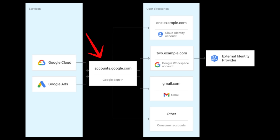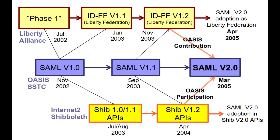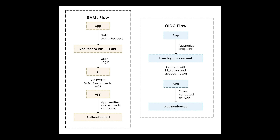While they solve the same core problem, SAML and OIDC come from different eras and technological foundations. SAML was designed in the early 2000s for enterprise web environments, while OIDC emerged in the 2010s for modern API-driven, mobile-first systems. As a result, their formats, transport mechanisms, and extensibility differ significantly.